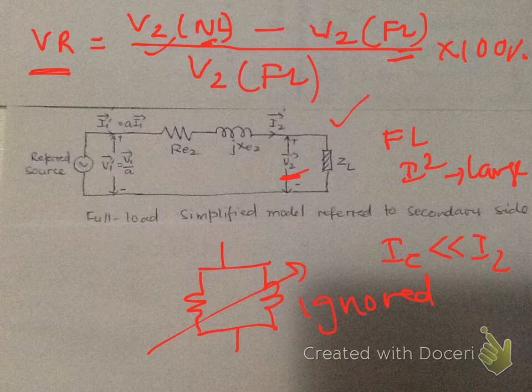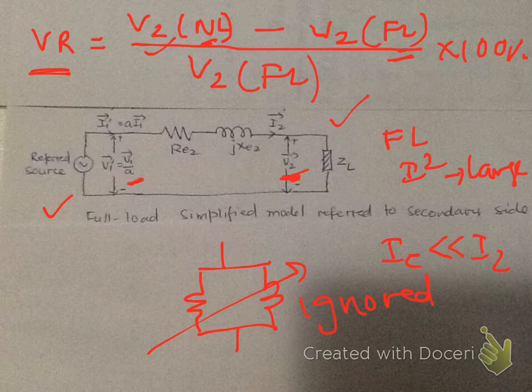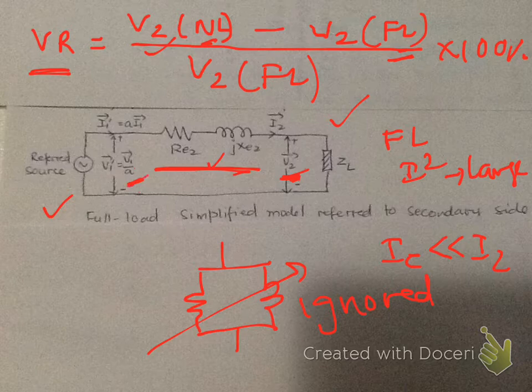Voltage regulation equals (V2_noload - V2_fullload) / V2_fullload, calculated from the simplified equivalent circuit. The entire circuit is referred to the secondary side, so V1/a equals V2 plus any voltage drop across RE and XE. You expect that drop to be as small as possible. For an ideal transformer, V2 equals V1/a exactly.